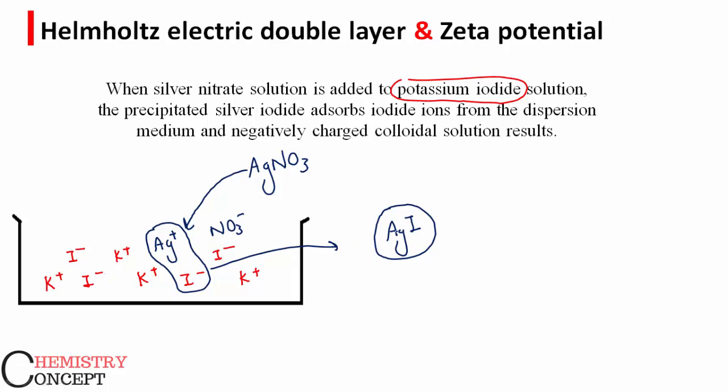The silver iodide colloidal particle will either attract silver ions on its surface or iodide ions from the solution. But because silver ions are not present—I am adding silver nitrate drop wise and whatever silver iodide is introduced gets attached with iodide ion to form AgI. So silver ions are not present in excess, but iodide ions are there.